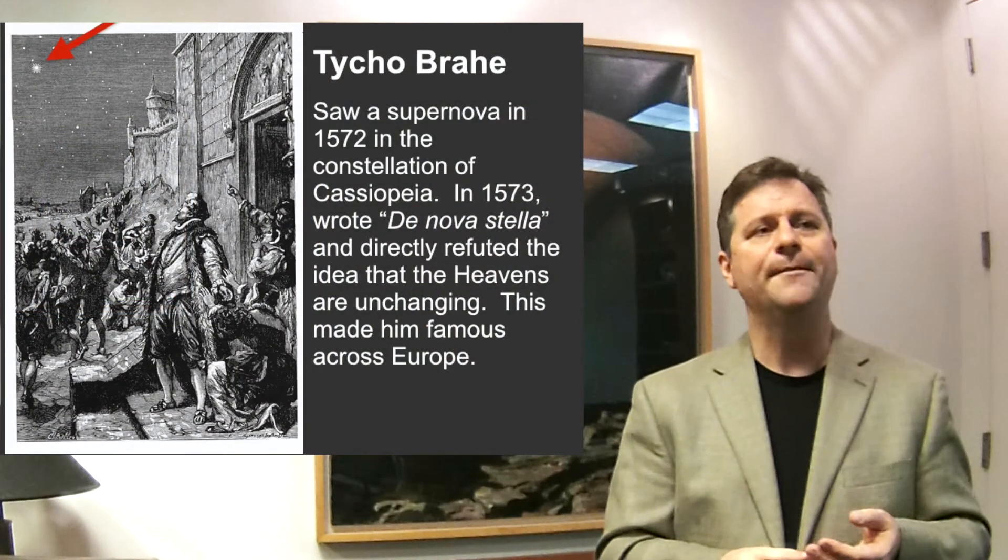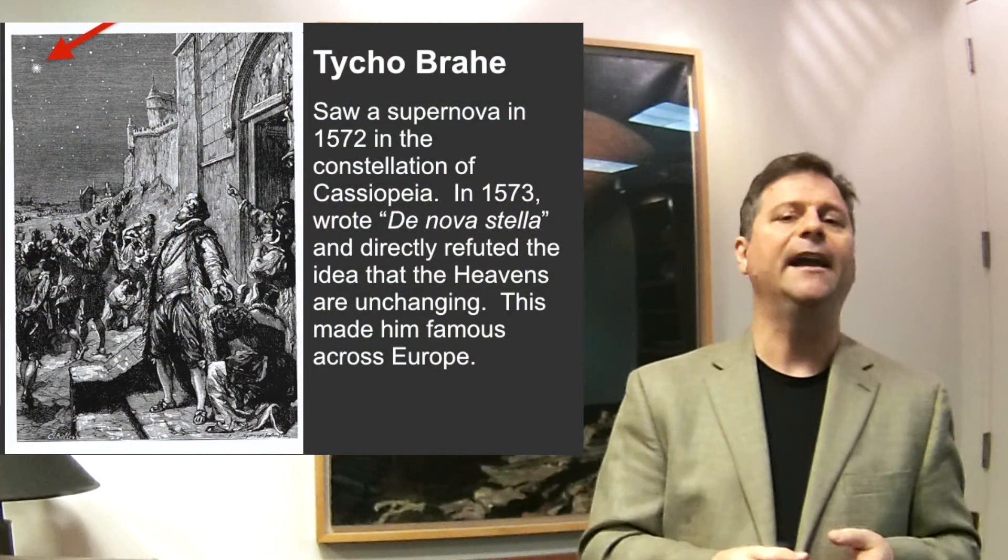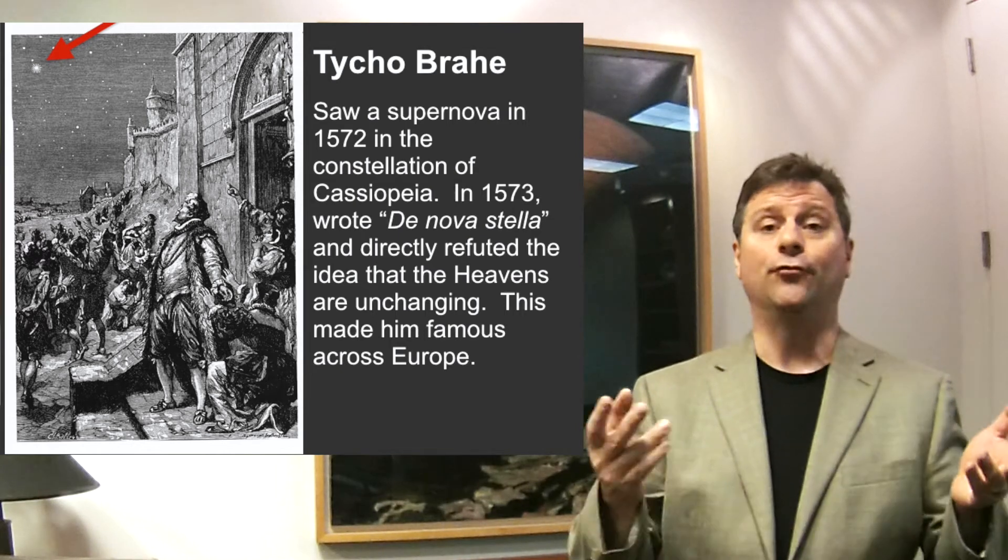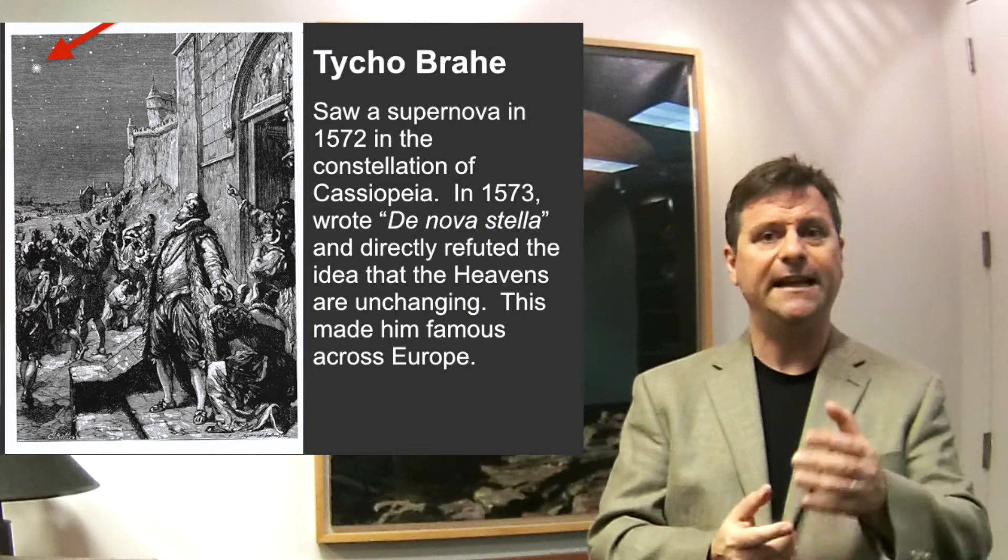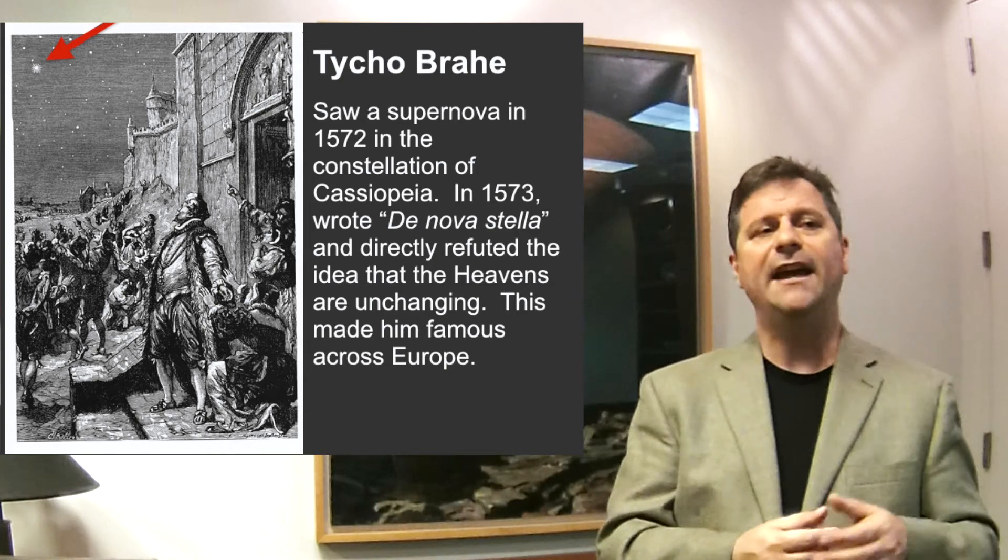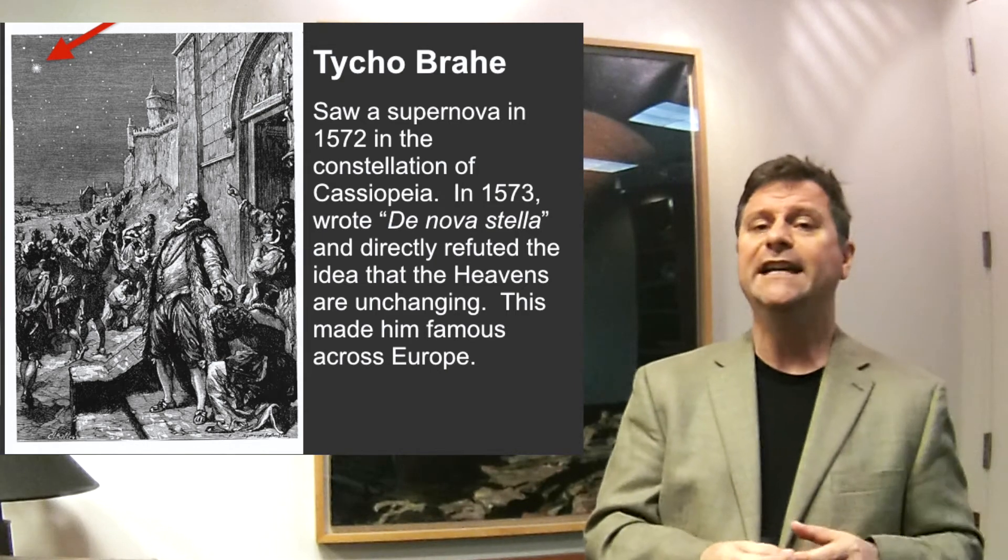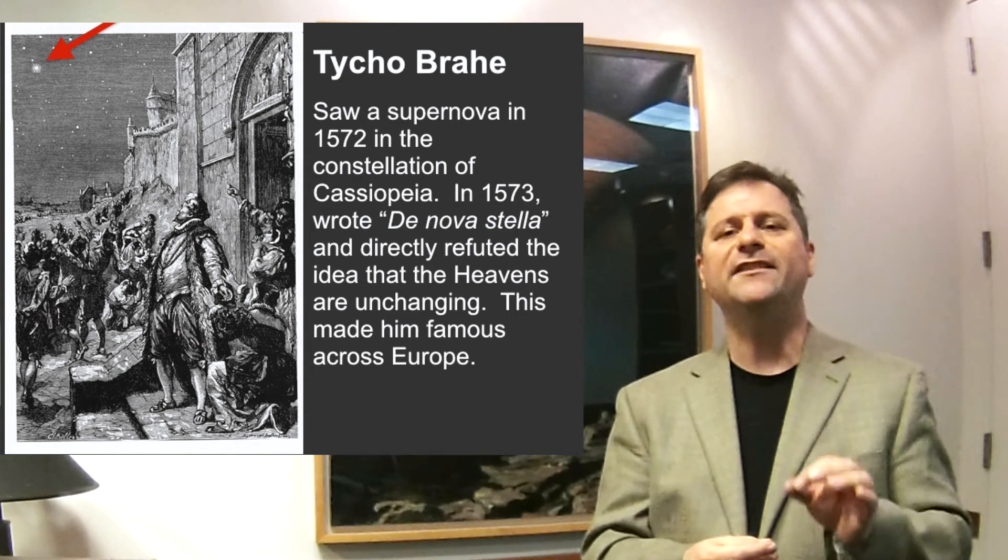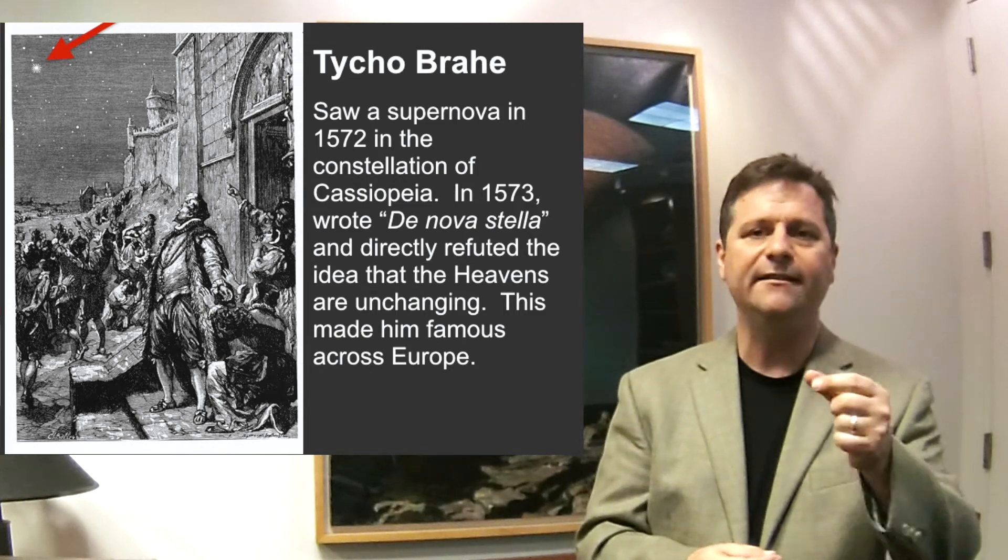But shortly after the 1540s, in 1572, there was a nobleman in Denmark by the name of Tycho Brahe, who looked up in the sky and saw a great star appear in the constellation of Cassiopeia. And that star was a supernova. And in 1572, that star made Tycho Brahe famous. Famous all across Europe.